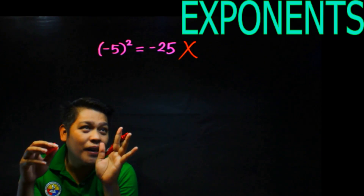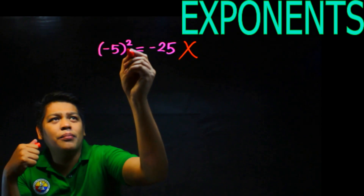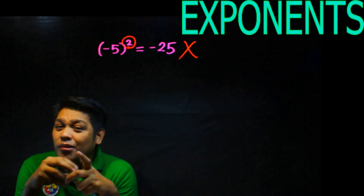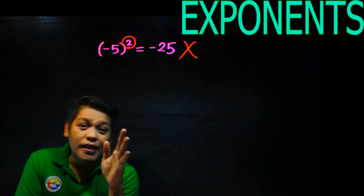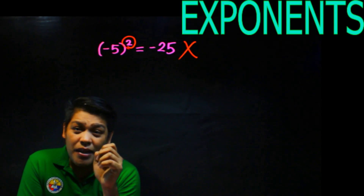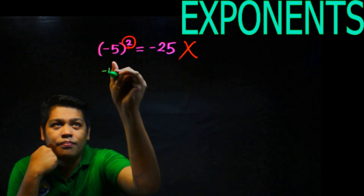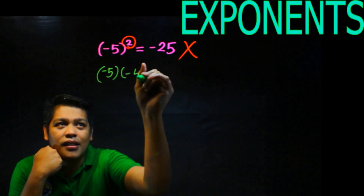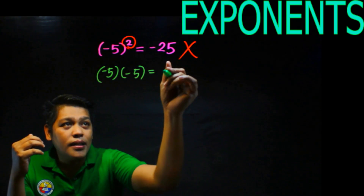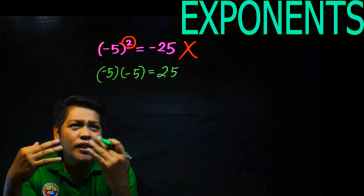That's a very big mistake. What is the concept of squared, or powers? The meaning of squaring is you multiply the base by itself as many times as the exponent on top. So if it's two, you multiply the base by itself twice. So negative 5 multiplied by negative 5 is positive 25 — because negative times negative is positive. That's where they get confused.